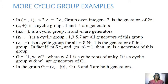Z under addition is a cyclic group for all N belonging to Z. The element 1 is the generator of this group. In fact, if M belongs to Zₙ and GCD of M and N equals 1, then M is a generator of this group.